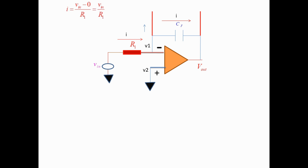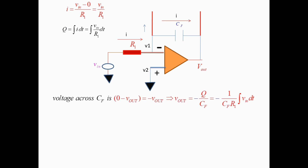We will now apply the concept of virtual ground to the integrator circuit. Current through R1 is I equals V_input minus 0 divided by R1, since V1 equals 0 as it is virtual ground — that is, I equals V_input divided by R1. Since the input impedance of the op-amp is infinite, the op-amp does not sink any current, and the same current flows through CF, charging it: Q equals the integral of I dt, where I equals V_input divided by R1. So Q equals the integral of (V_input / R1) dt. Voltage across CF equals 0 minus V_output equals minus V_output, since V1 equals 0 due to virtual ground. Therefore, V_output equals minus Q divided by CF equals minus (1 / CF R1) times the integral of V_input dt.